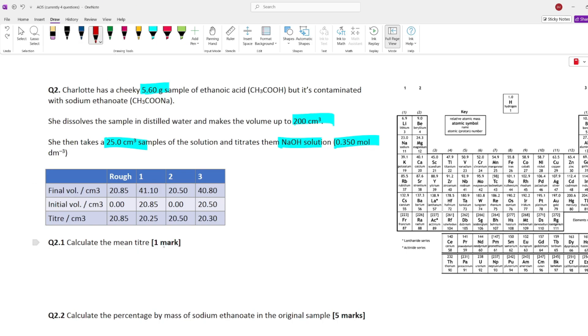A really easy year 12 question. Mean titer, what does this mean? Just means average titer. What do you need to do? You just need to look for the concordant results. Concordant is within 0.1 centimeters cubed of one another. And that is always going to be the titer. Ignore the final, ignore the initial volume for this case. It's always going to be the titer that has to be concordant.